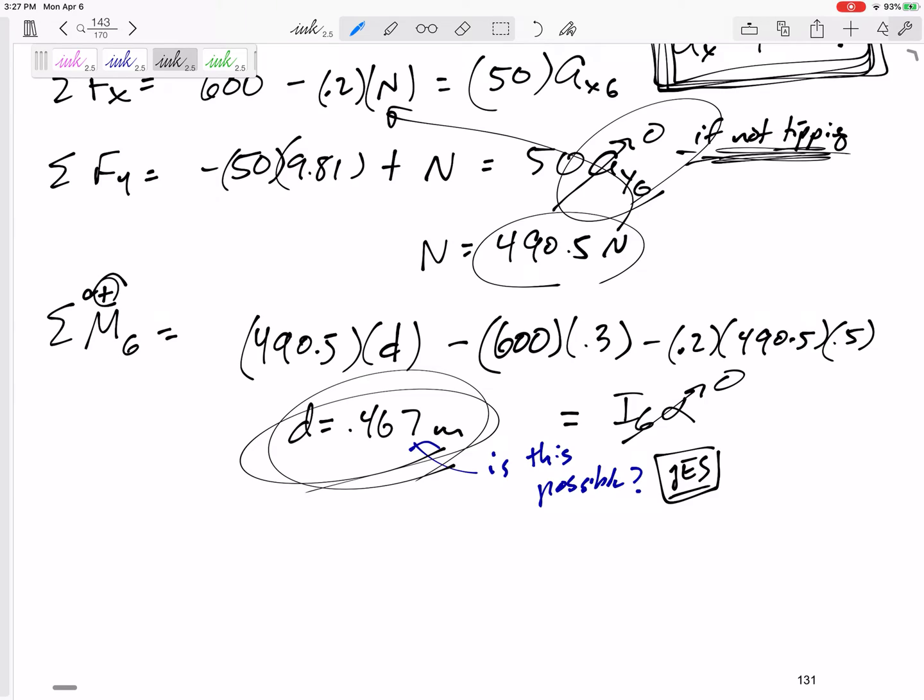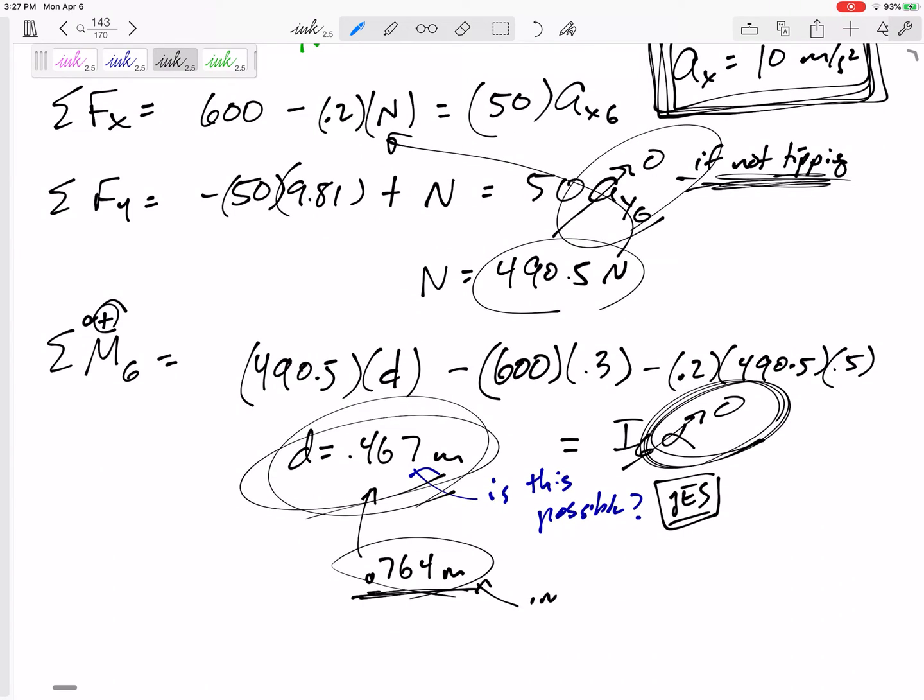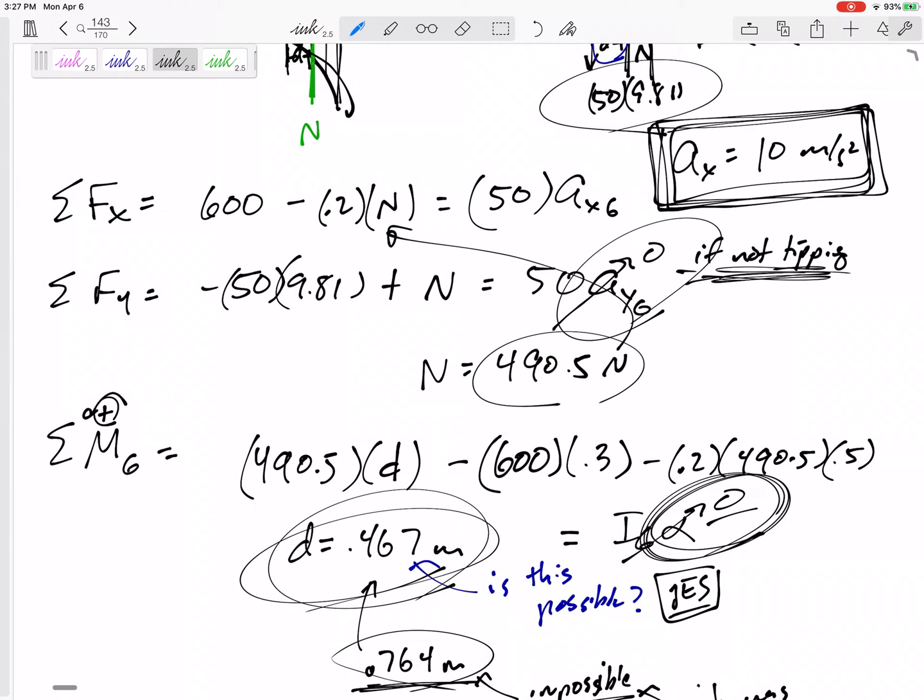What if I had gotten that this d needed to be 0.7 something. What if I had gotten that that normal force is 0.764 meters away from the center, then what would that mean? That means that in order for this to equal zero, my normal force would have to be 0.764. If I got something that was impossible, if I got something that was impossible, what does that mean? That means it was tipping, not slipping or tipping and slipping or tipping before slipping.